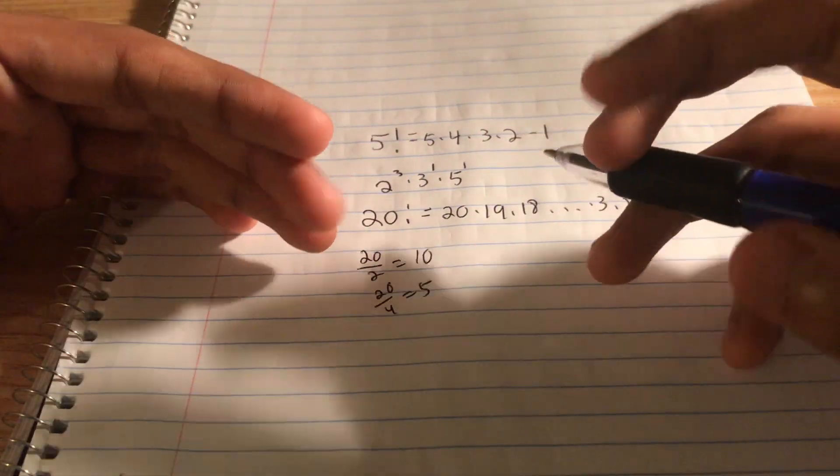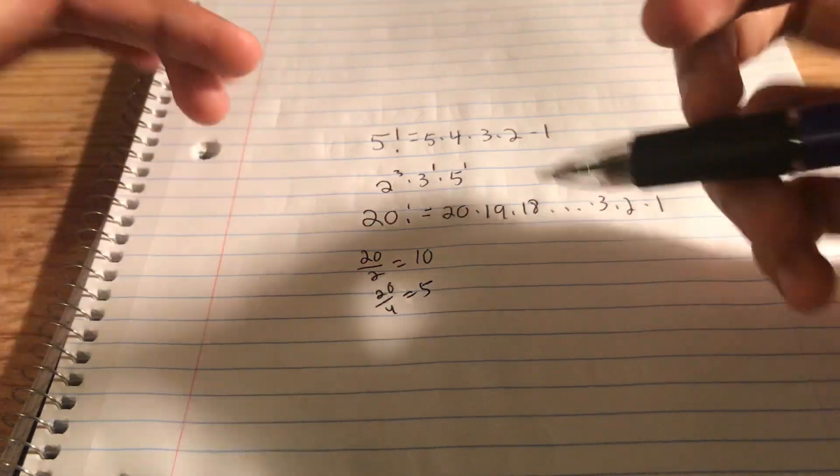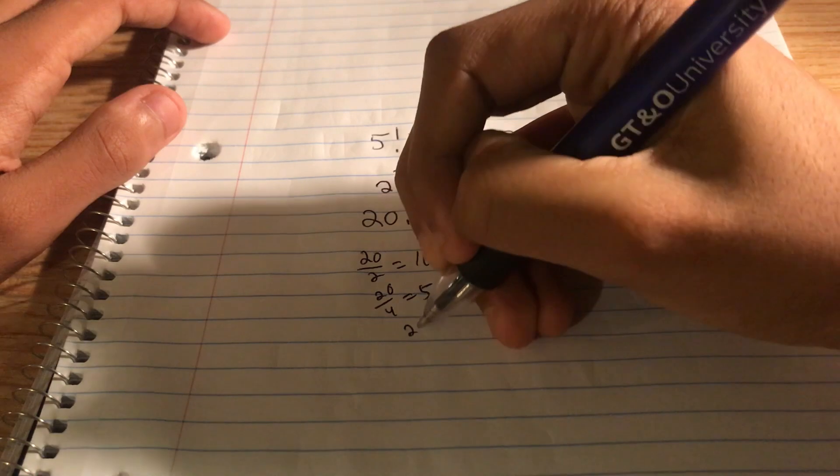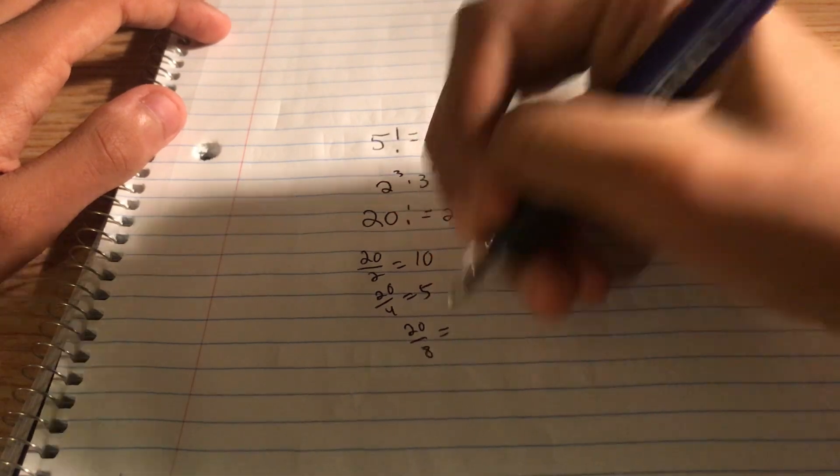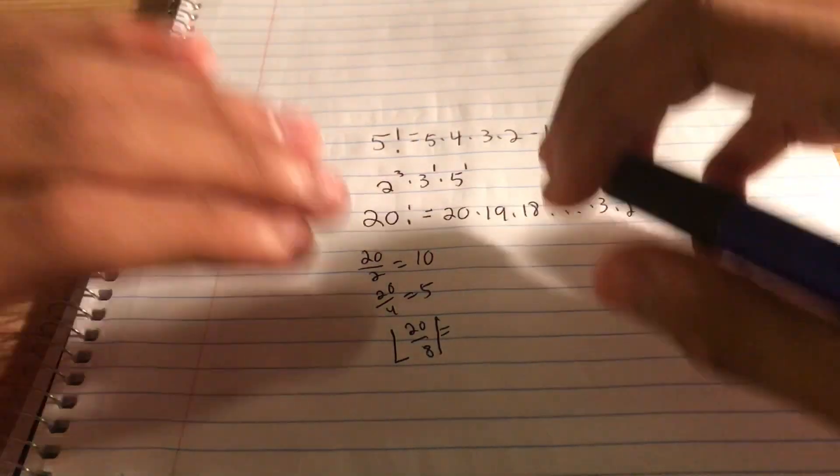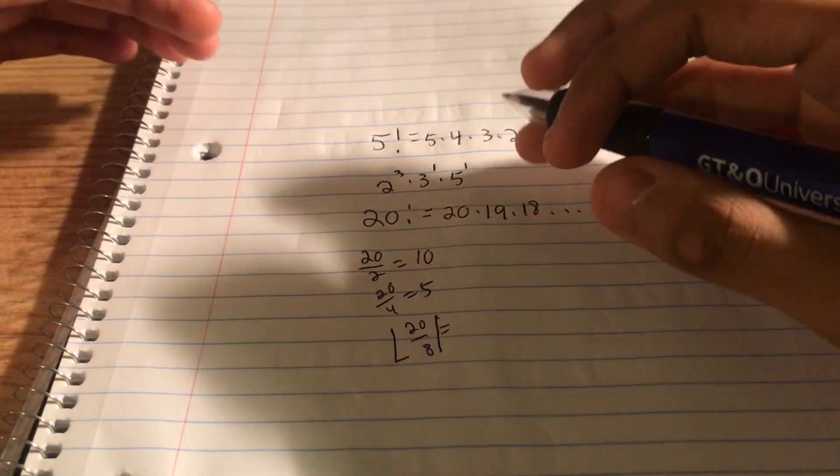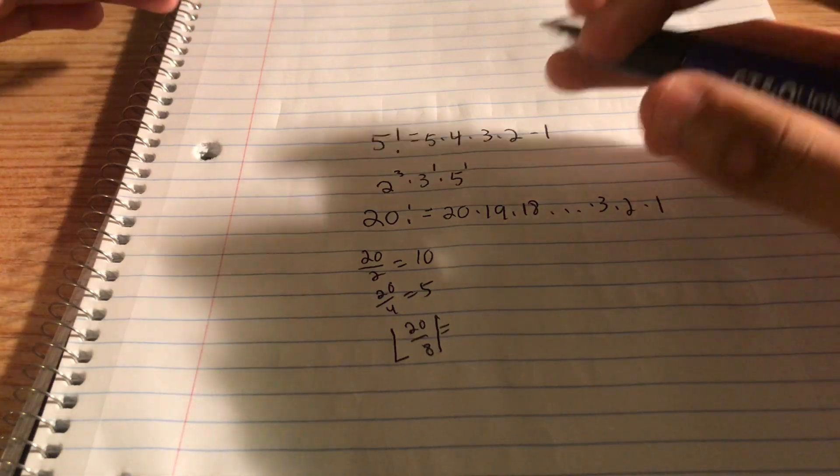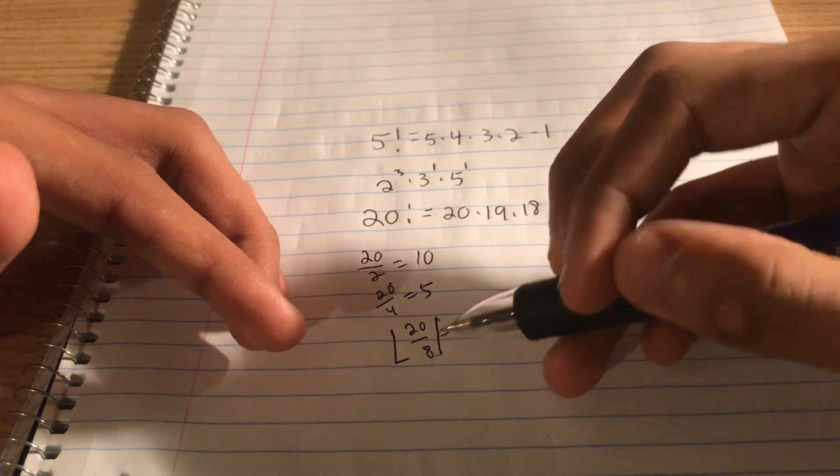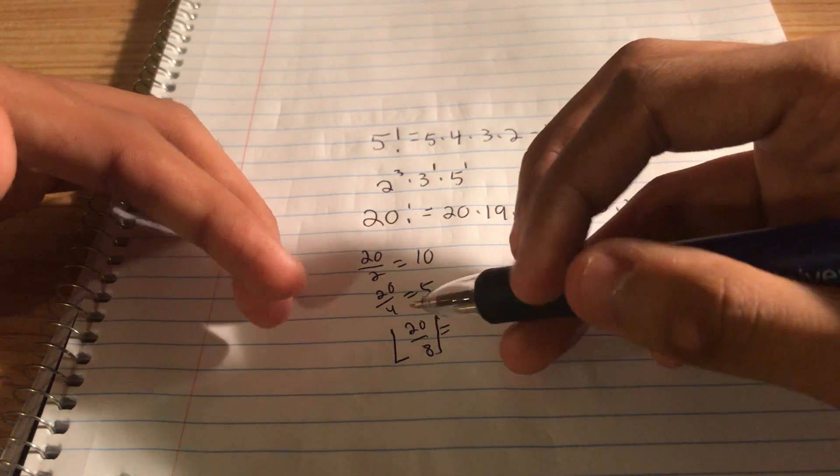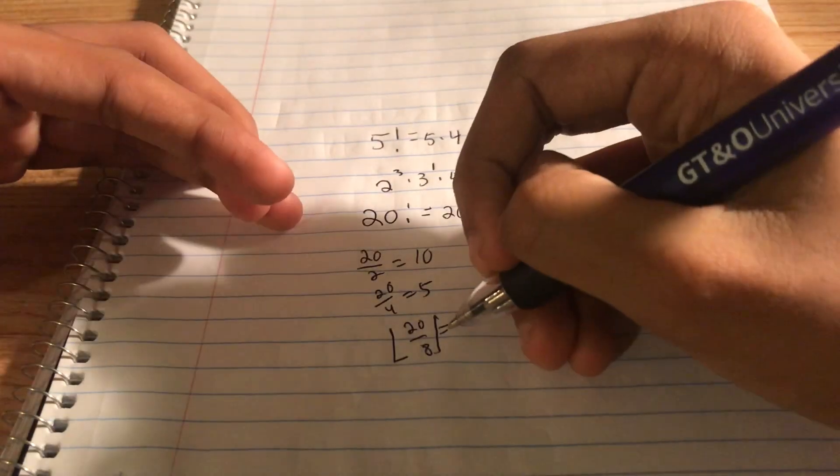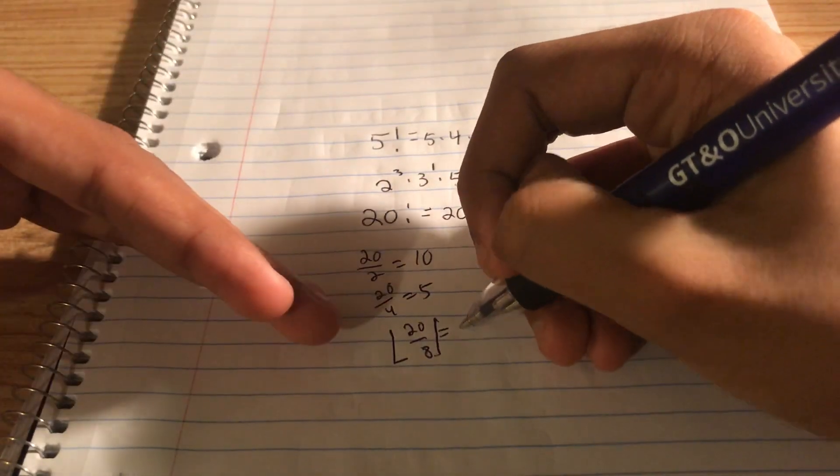8 is 2 cubed. So now we have to look at all the multiples of 8 up to 20. If we do 20 divided by 8, we don't get an integer. However, if we take the floor function, and all the floor function is, is taking the integer less than the number that you get inside of this floor function. So 20 divided by 8 is 2 point something, but we don't want that point something. We just want a whole number, so round down to 2. You always round down.